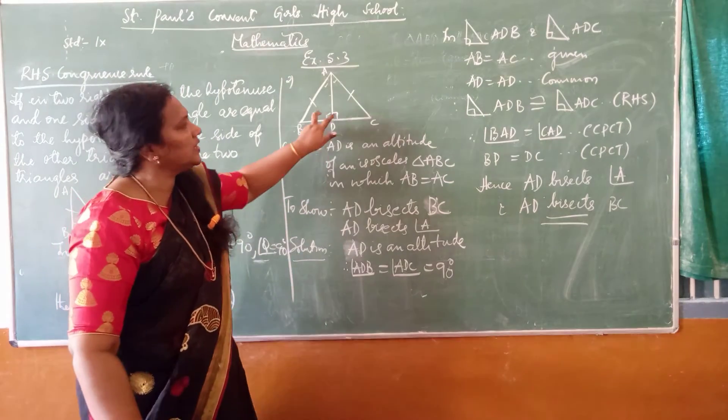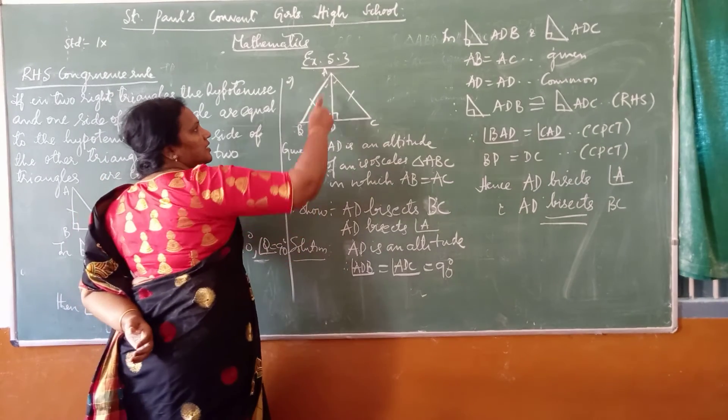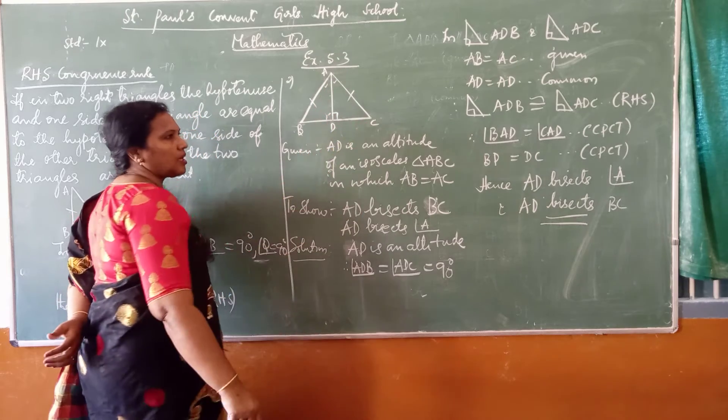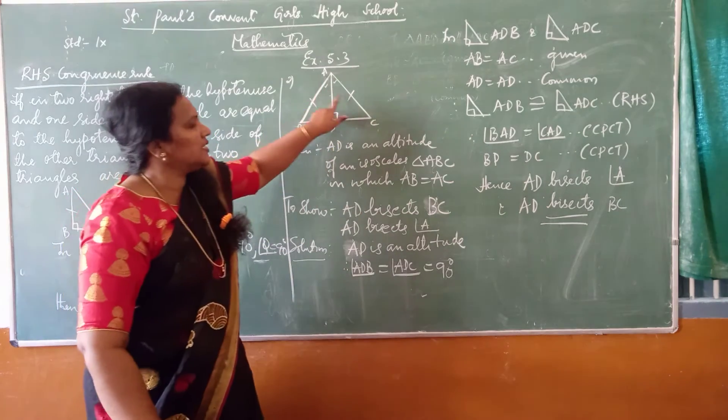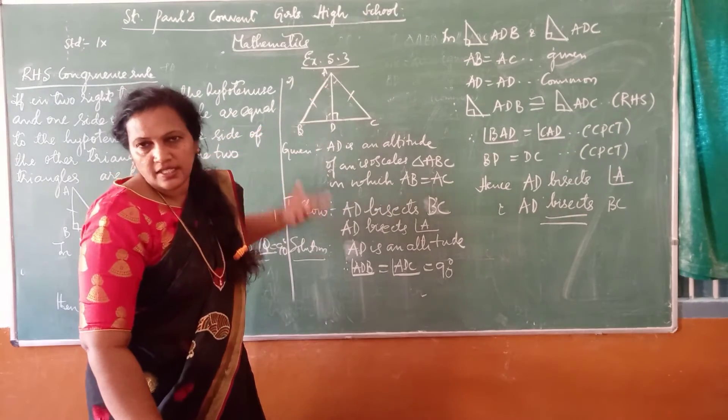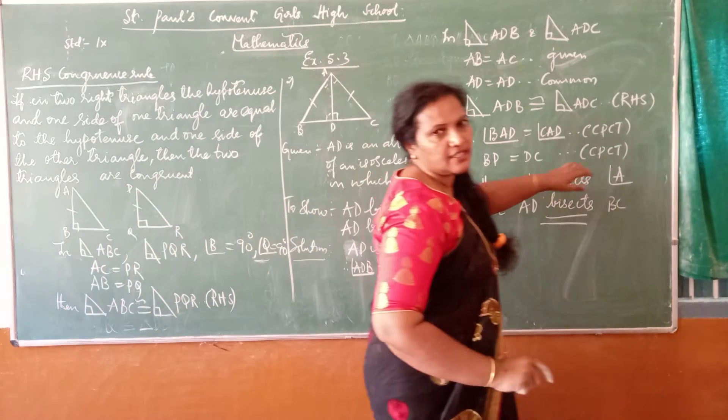It is easy children. I have to show these two triangles are congruent. So let me take these two triangles. In triangle ADB and triangle ADC, AB is equal to AC. This is already given. AD is equal to AD. It is common. Therefore the two triangles are congruent by which postulate? RHS.